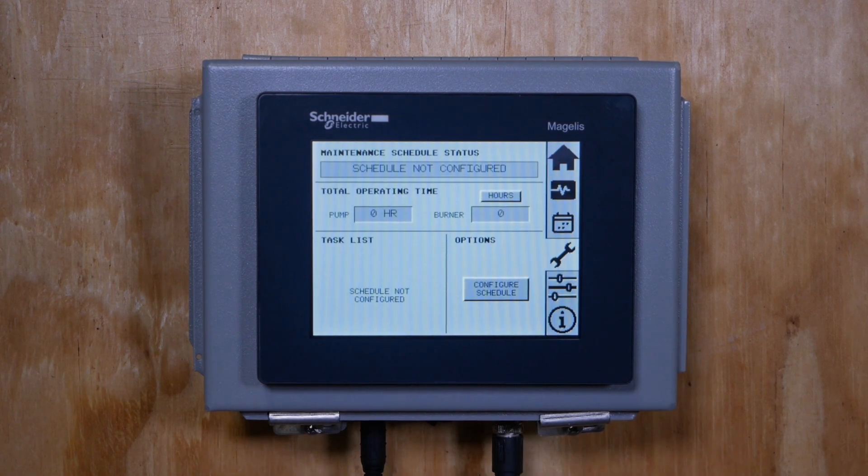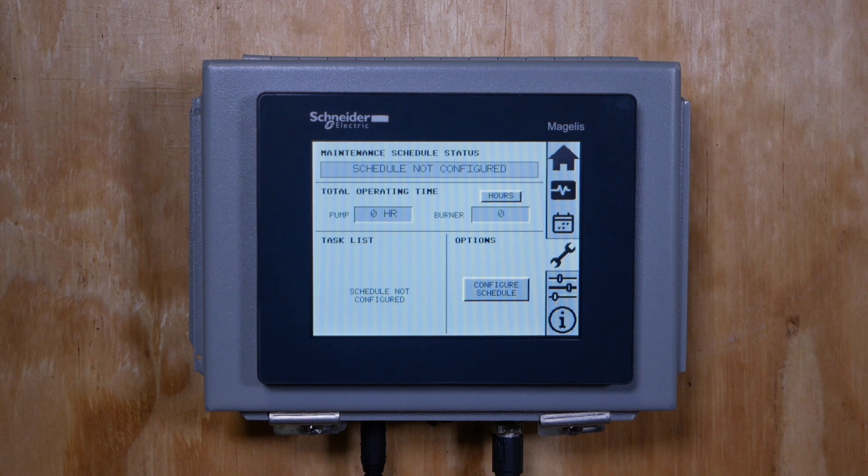Tap the wrench icon to access the maintenance menu. This page shows the operating hours and cycles of the burner and pump, if applicable. Maintenance schedules and reminders can also be set up within this menu.